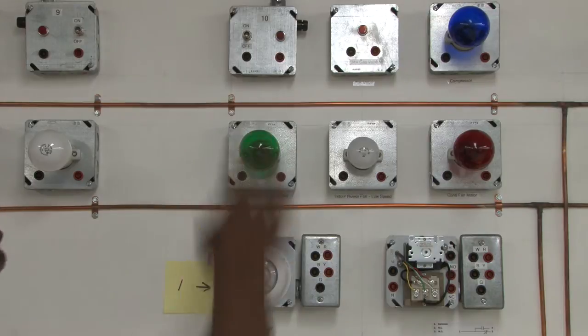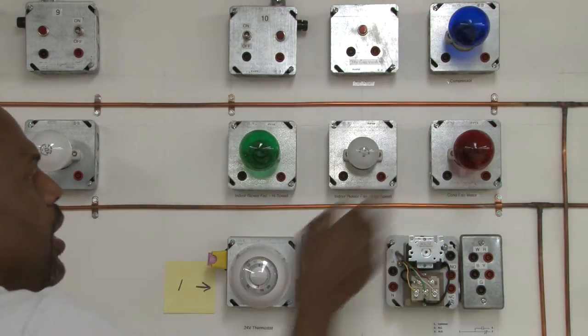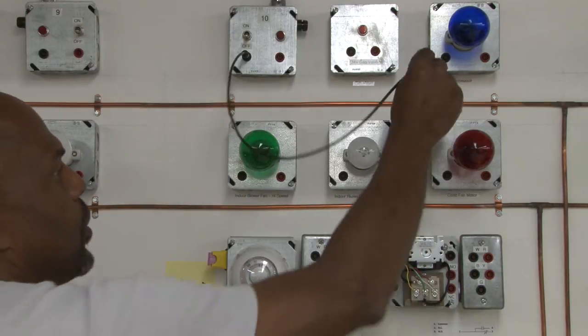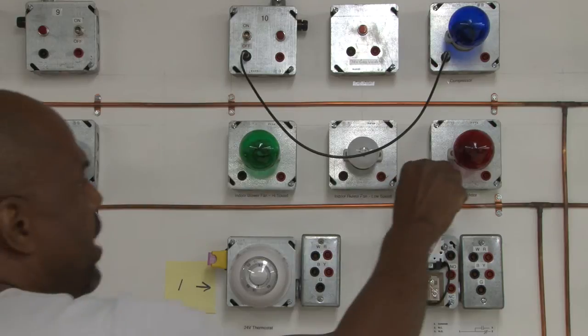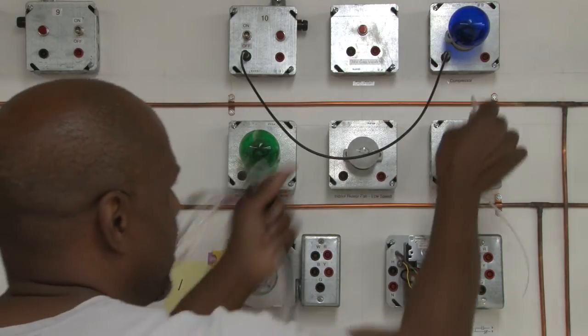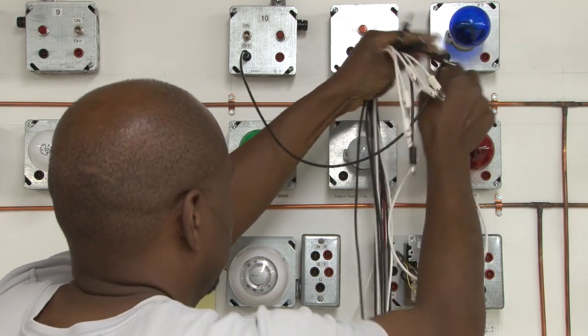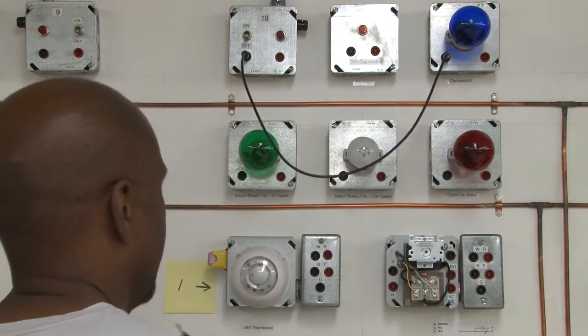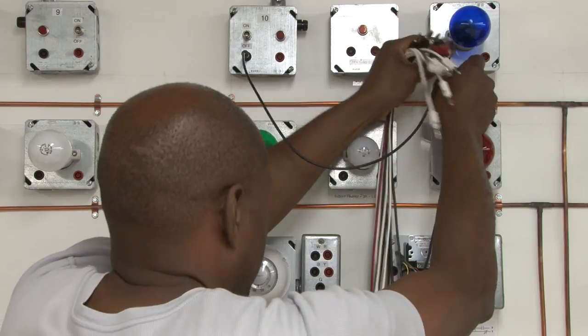So we're going to look at this power source, which is 120 volts, and we're going to wire these light bulbs in parallel with each other. We're going to start with the main power, go to one light bulb, come out from that light bulb, and actually connect it, the hot light bulb, through the power source.